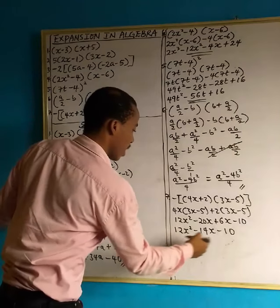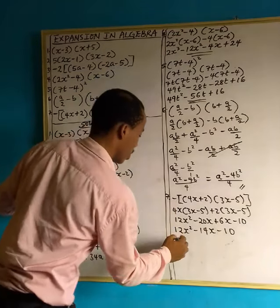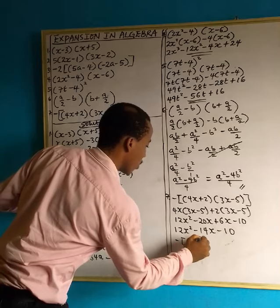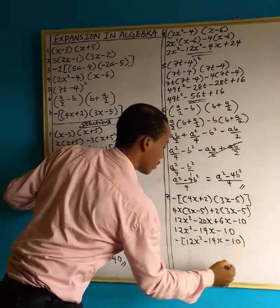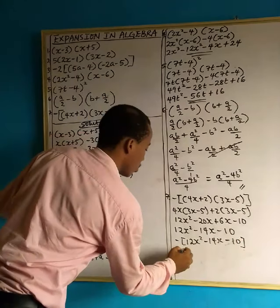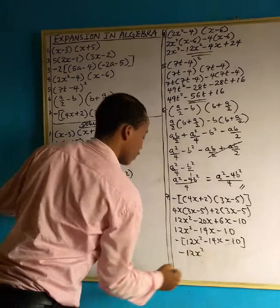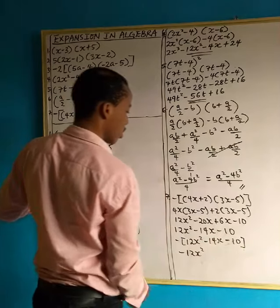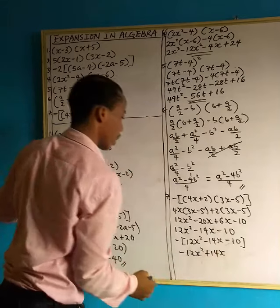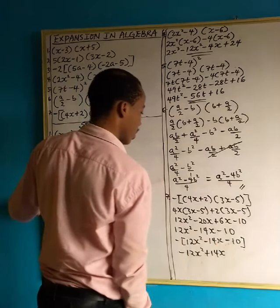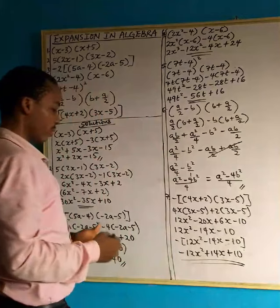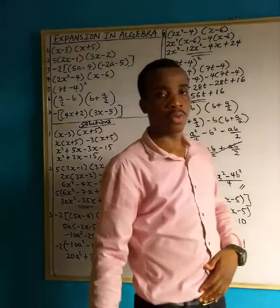Now we're not done yet — we take this value and multiply it by the minus sign we set aside. Minus multiplied by 12x squared gives minus 12x squared. Minus multiplied by minus 14x gives positive 14x. Minus multiplied by minus 10 gives positive 10. So the final answer is minus 12x squared plus 14x plus 10.